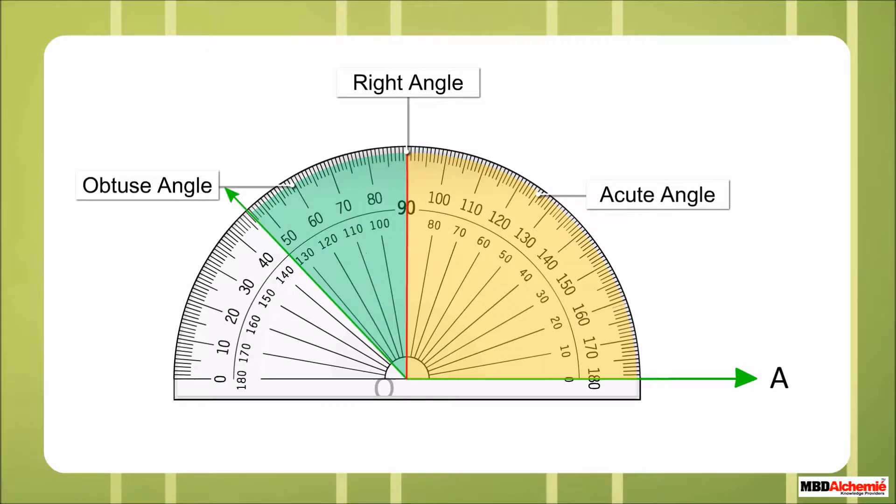Obtuse angle measures greater than 90 degrees but less than 180 degrees.